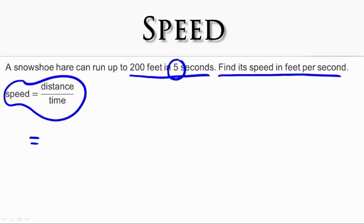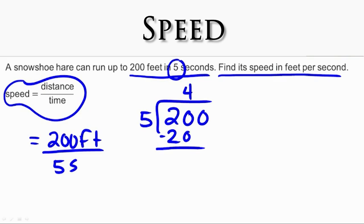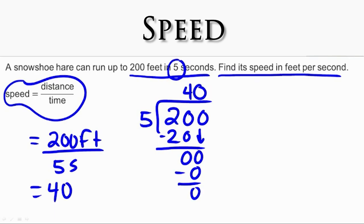Speed is equal to the rate of distance to time. The distance is 200 feet compared to the time of five seconds. So we need to divide the distance by the time since the time is not equal to one. We take 200 and divide it by five. Five goes into 200 forty times, giving us 40. So the snowshoer can run at a speed of 40 feet per second. This is how you express speed as a unit rate.